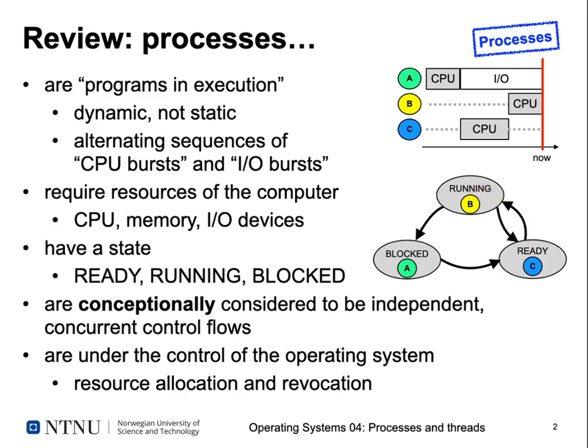Processes are conceptually considered to be independent and concurrent control flows. Since we only have one CPU in the simple case, we have to switch between processes to enable this illusion of concurrency. Processes are a very important abstraction and are under control of the operating system, which performs resource allocation and resource revocation when a process is no longer allowed to use some resources.